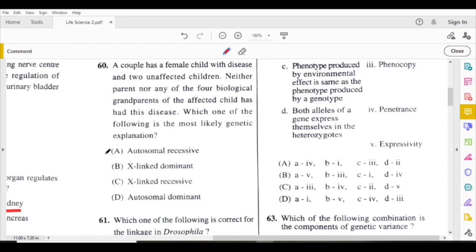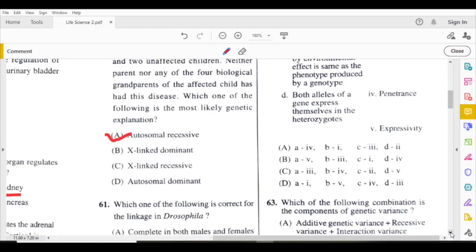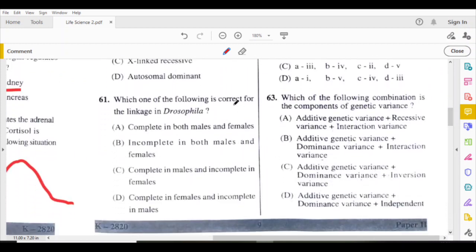Here the answer is autosomal recessive. Which one of the following is correct for linkage in Drosophila? Drosophila shows complete linkage in males and incomplete in females.